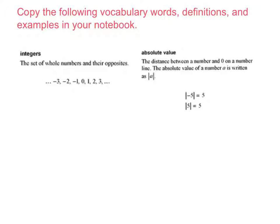Integers are the set of whole numbers and their opposites. Absolute value is the distance between a number and 0 on a number line. The absolute value of a number A is written as absolute value of A — those tall bars are the absolute value sign.